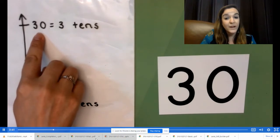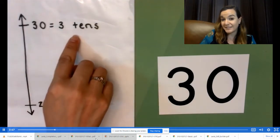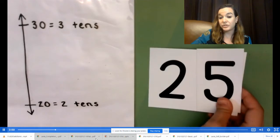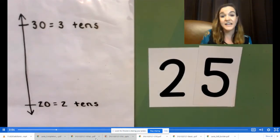In unit form, what number is halfway between two tens and three tens? Two tens, five ones.